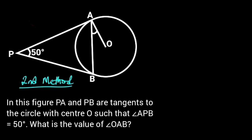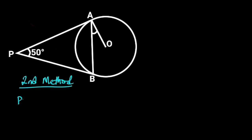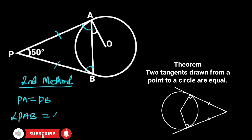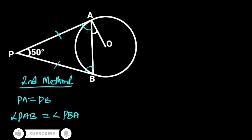Second method. Since PA and PB are tangents from a point to the circle, it follows that PA is equal to PB. Reason: from the circle theorem of tangents from a point to the circle, which states that two tangents drawn from a point to a circle are equal. Since PA is equal to PB, triangle PAB is an isosceles triangle, and it follows that angle PAB is equal to angle PBA. Reason: base angles of an isosceles triangle are equal.